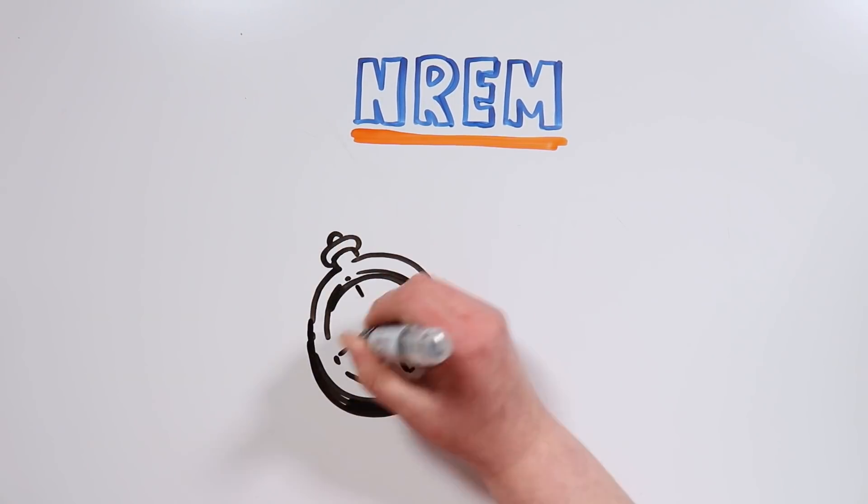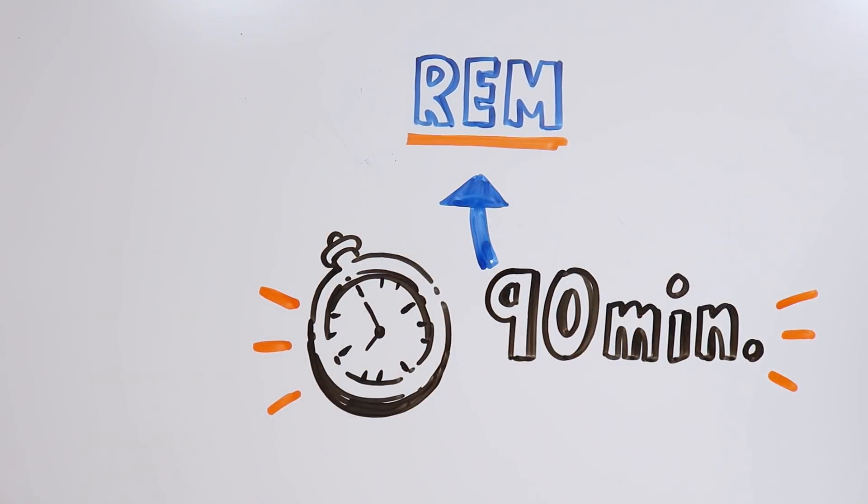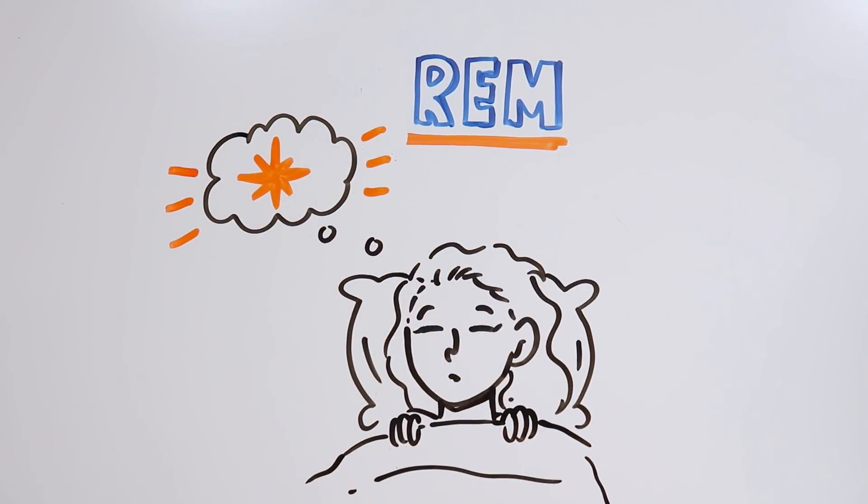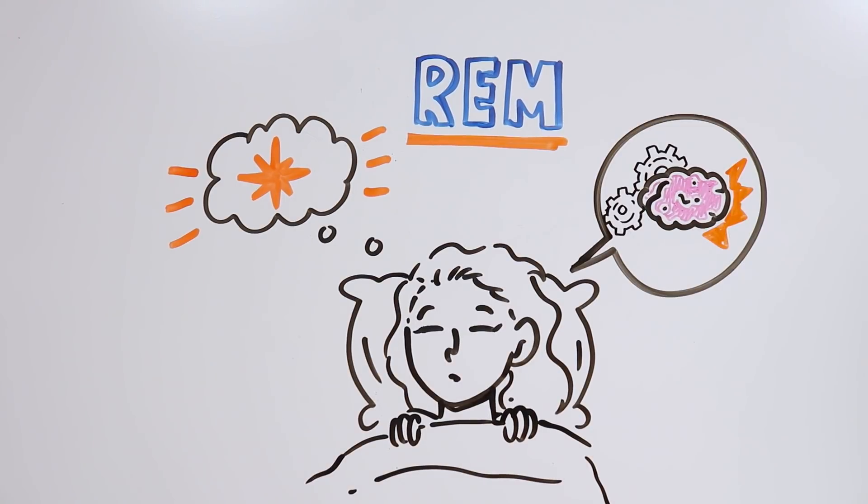And once we've been sleeping for about 90 minutes, this is when the REM phase starts. Here's when dreams are produced, and our brain activity is so high that it can sometimes be more intense than our brain activity while awake.